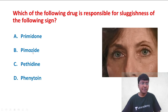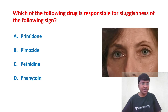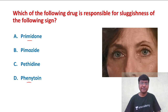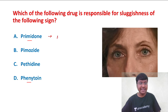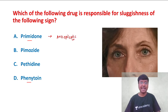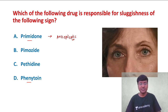The options are primidone, pimozide, pethidine, and phenytoin. If you take primidone and phenytoin, both of these drugs are anti-epileptic drugs. They do not have much effect on the pupillary size and they do not affect the light reflex.